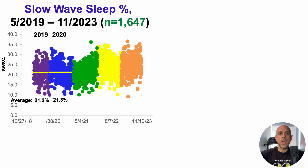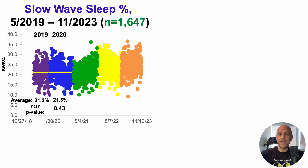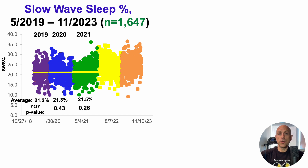In 2019, my average slow wave sleep percentage was 21.2%. In 2020 it was 21.3%, and using a two-sample t-test those two groups were not significantly different — no age-related decline year over year. In 2021 the average was 21.5%, again not significantly different from 2020, so no age-related decline for at least two years from the 2019 baseline.